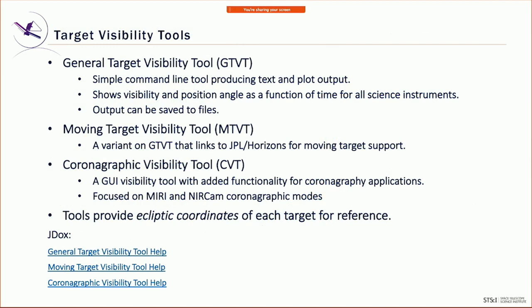The target visibility tools include a general tool — a simple command-line tool that does the job — a moving target flavor linked into the Horizons moving target support system, and a coronagraphic tool. All of these tools output the ecliptic coordinates of each target for reference, since that's an important angle to understand when interpreting the plots.